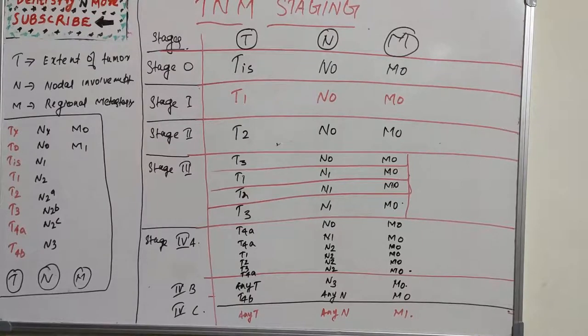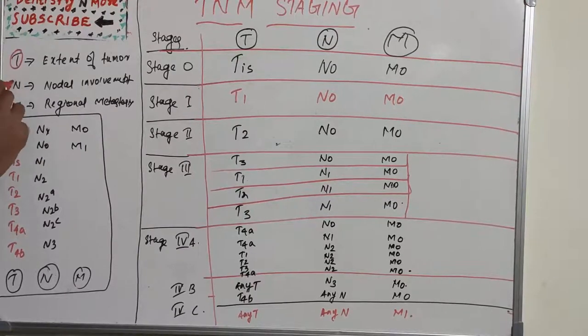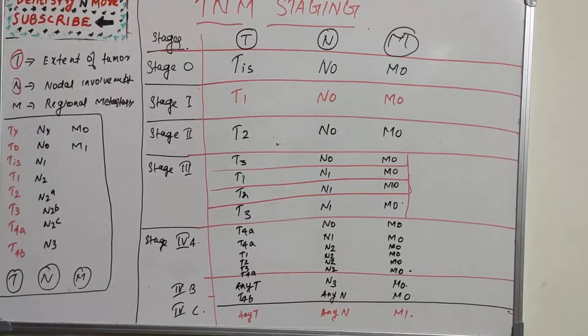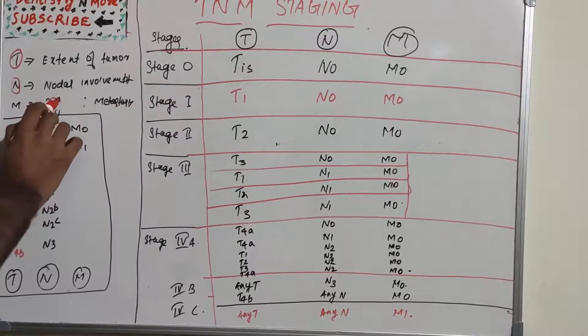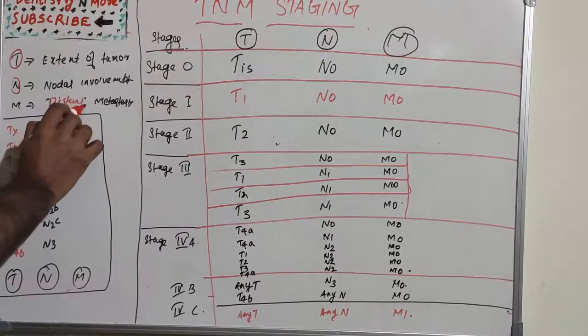The extent of tumor, denoted by T; the presence or absence and extent of regional lymph node metastasis, denoted by N; and the presence or absence of distant metastasis, denoted by M. This is distant metastasis, and this is regional metastasis.